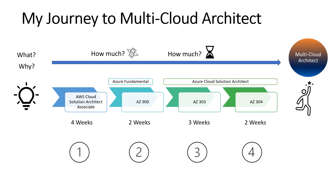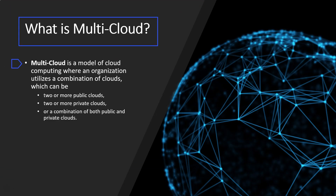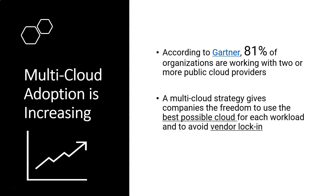Let's start with what is multi-cloud. Multi-cloud is a model of cloud computing where an organization utilizes a combination of clouds. This combination could be two or more public clouds, two or more private clouds, or a combination of both public and private clouds. As per Gartner, multi-cloud adoption is increasing and 81 percent of organizations are working with two or more public cloud providers.